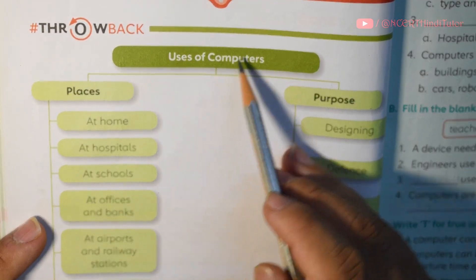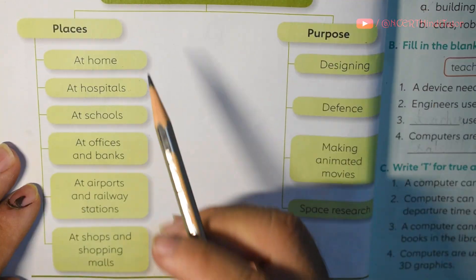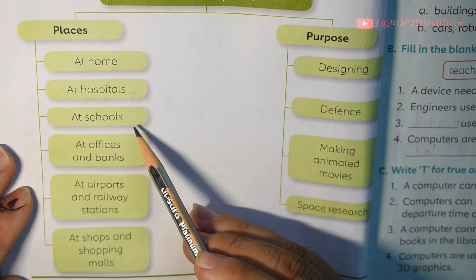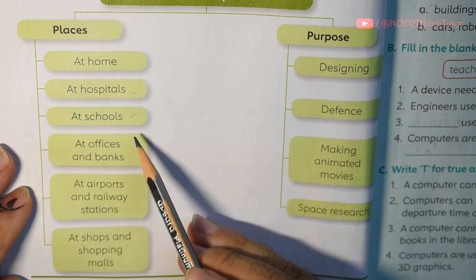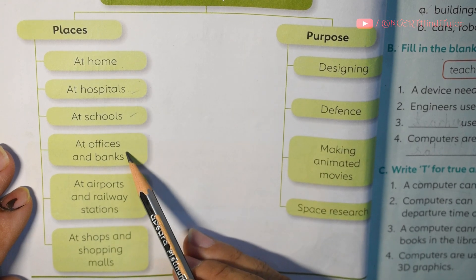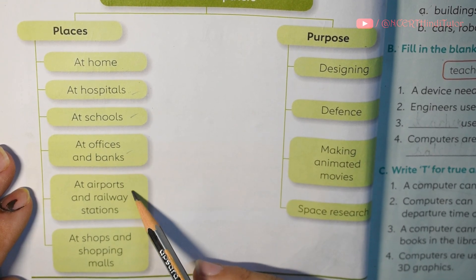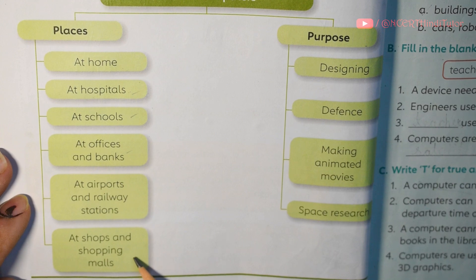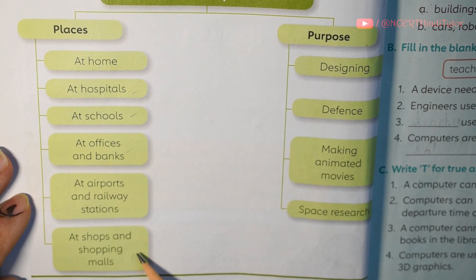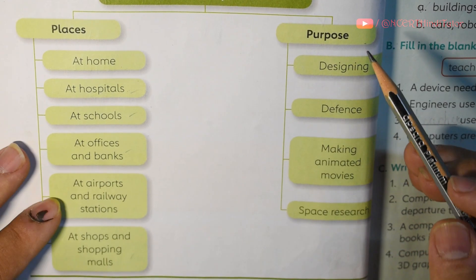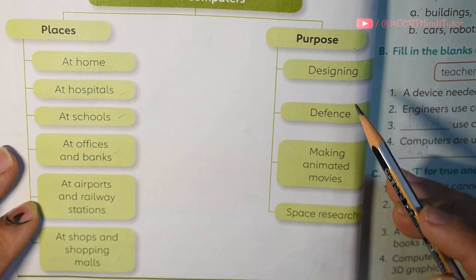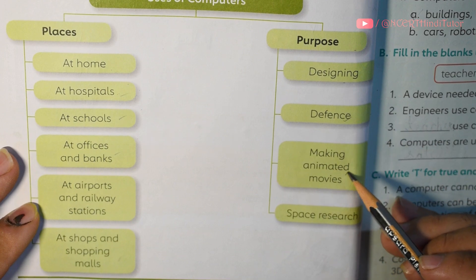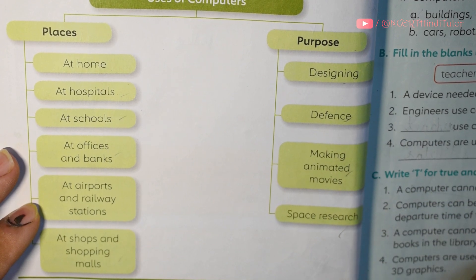Throwback — Uses of Computers. Places: at home, at hospital, at schools, at offices and banks, at airports and railway stations, at shops and shopping malls. Purpose: designing, defense, making animated movies, space research.